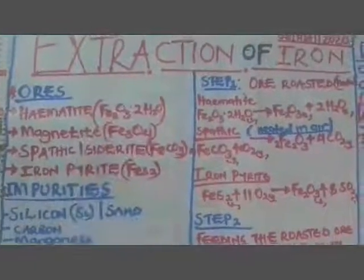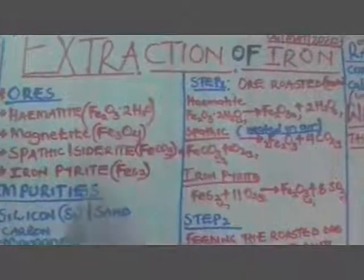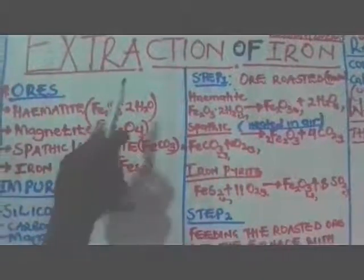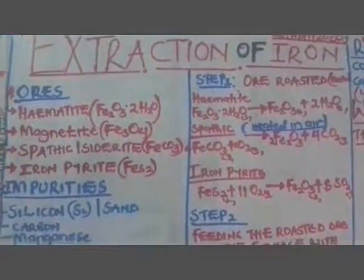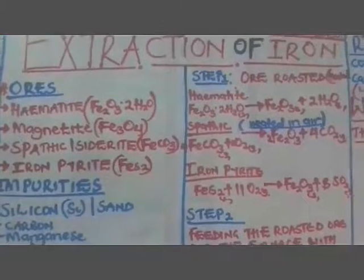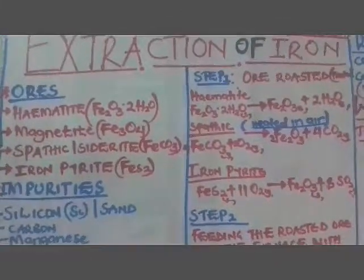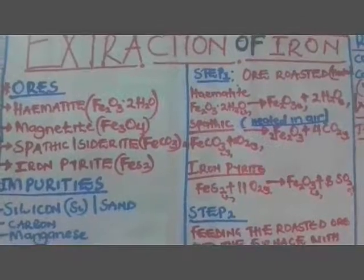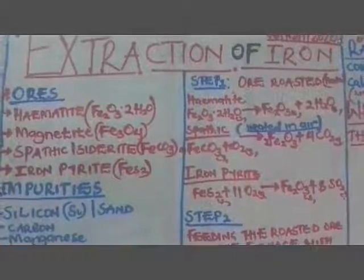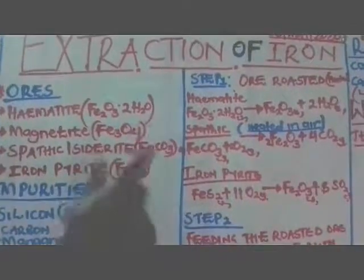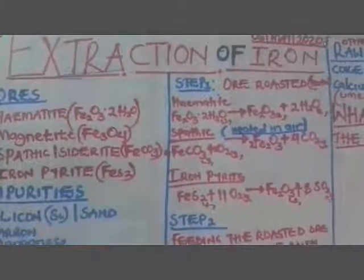We are going to look at what is called metal extraction. Specifically, extraction refers to the process by which we can obtain a pure element from its impure state or from the state in which it exists naturally underground. Elements always exist in a crude form or in pure form, so how we obtain and purify them is what we refer to as extraction.